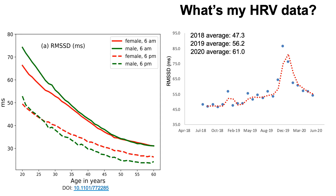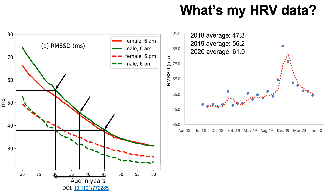To put my data in context with the aging literature: I started tracking at age 45. Based on the Fitbit users study, the average RMSSD for that age was around 38–40. Even at my starting point — when training and rest were suboptimal — I was already a bit above average at 47. Looking at my 2019 data on the aging curve, my heart rate variability age is equivalent to that of a 30-year-old, which is pretty good.